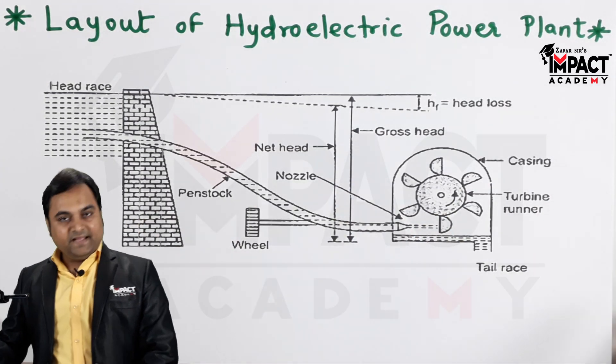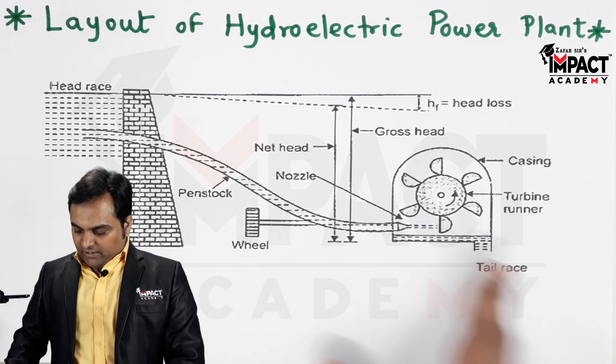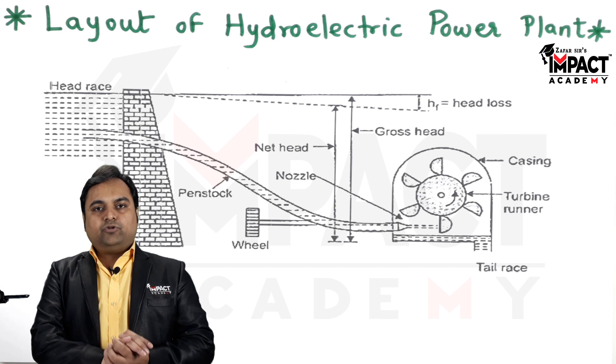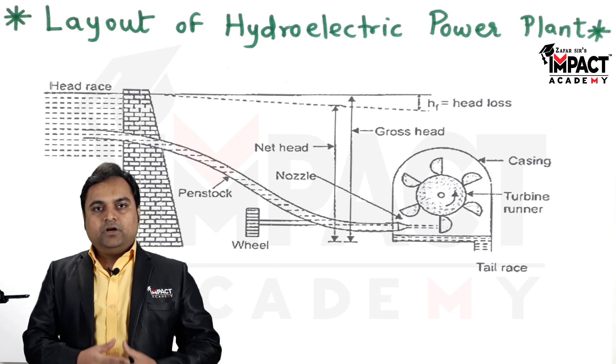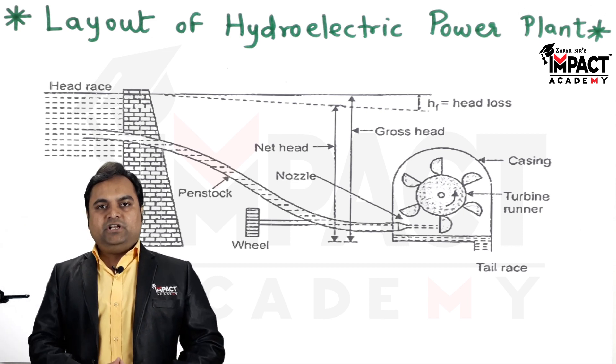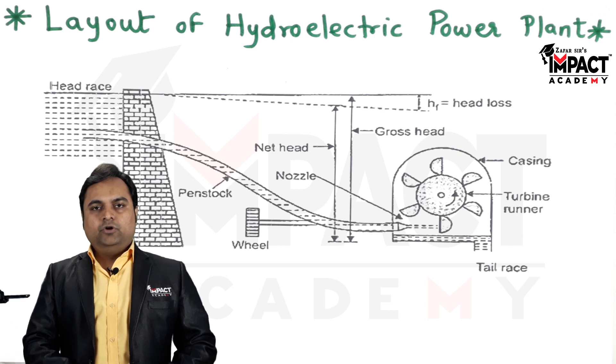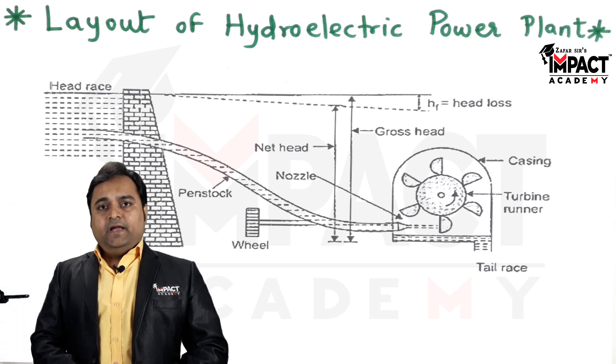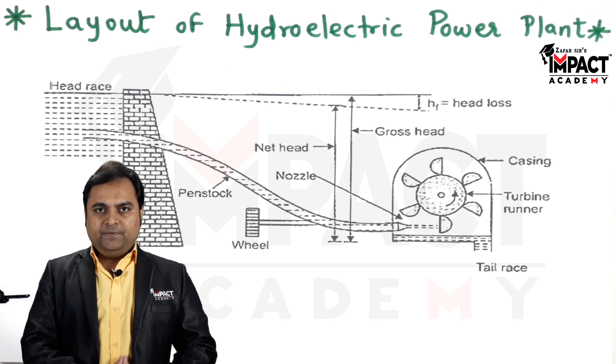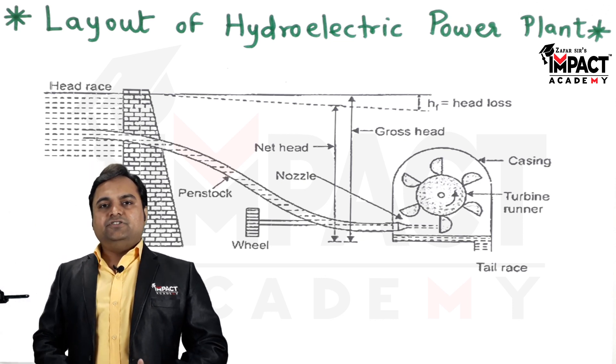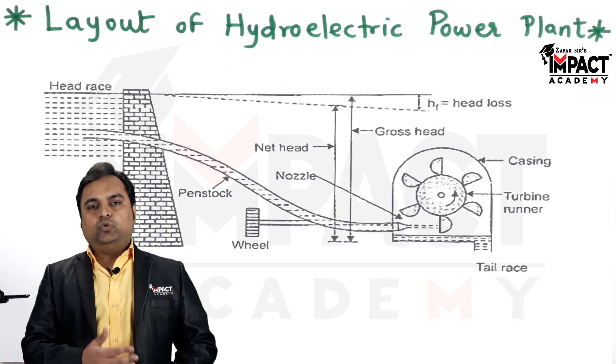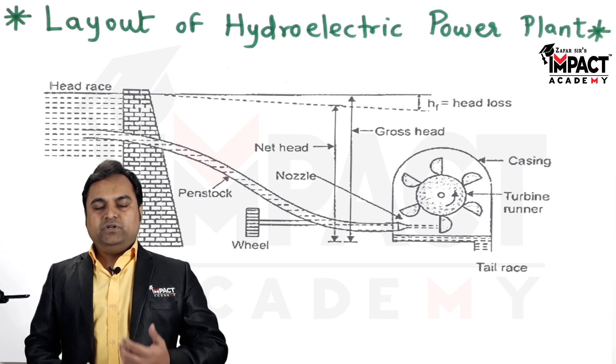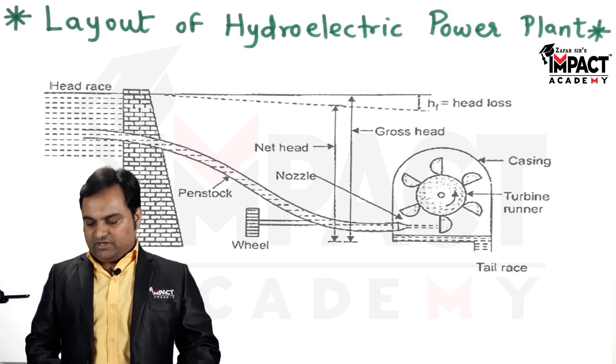Now, here is the diagram of a layout of a hydraulic power plant. This hydraulic power plant would be converting the potential energy of water which is stored at a considerably high level into kinetic energy, and that kinetic energy would be utilized to rotate a shaft in order to get the work which is the work done at the shaft.